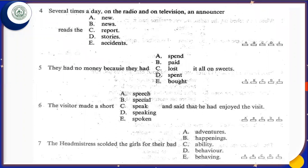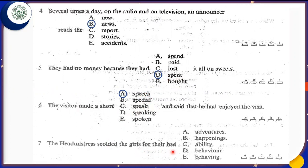The second part starts at part number four. Several times a day on the radio and on television, an announcer reads the news — 'the news' is our correct answer. They had no money because they had spent — after 'had' we always write the third form of the verb, which is 'spent'. The visitor made a short speech — 'speech' is our correct answer. The headmistress scolded the girls for their bad behavior — 'behavior' is our correct answer. We have finished the second page of this lesson in the workbook.